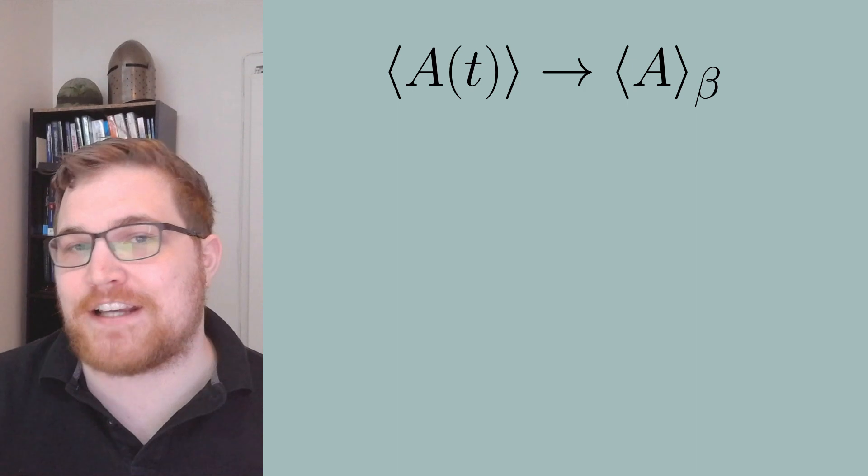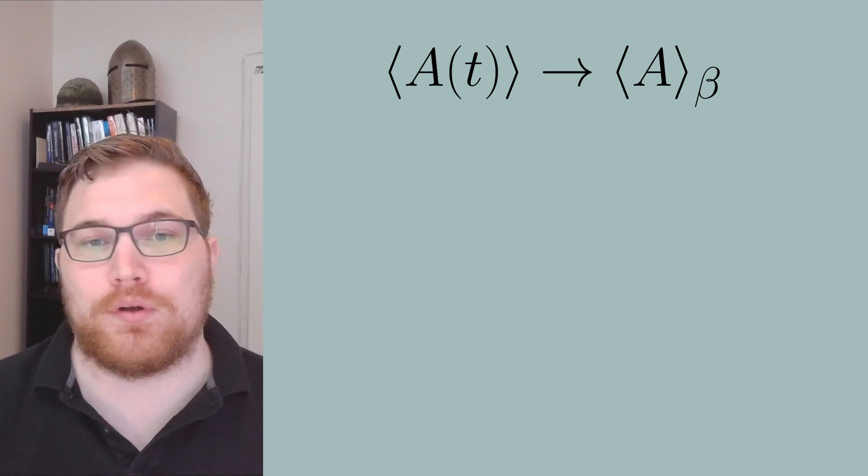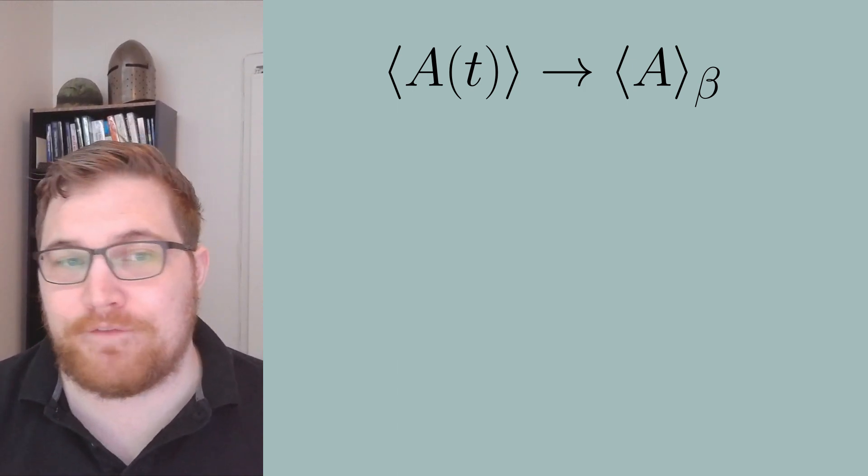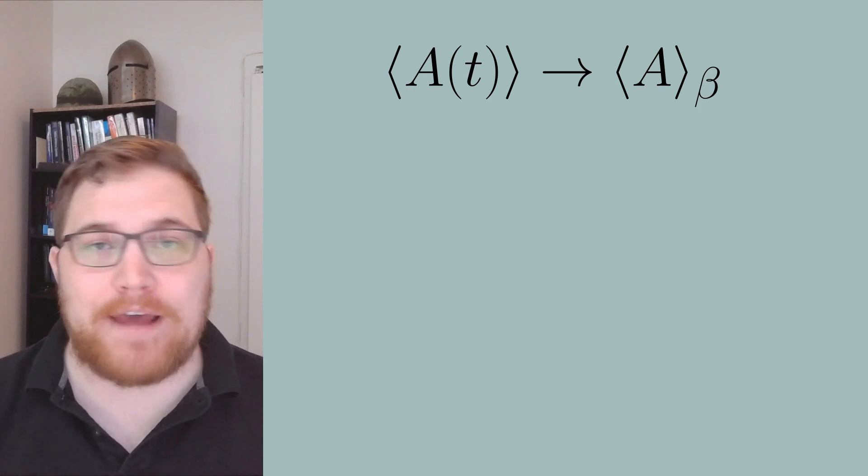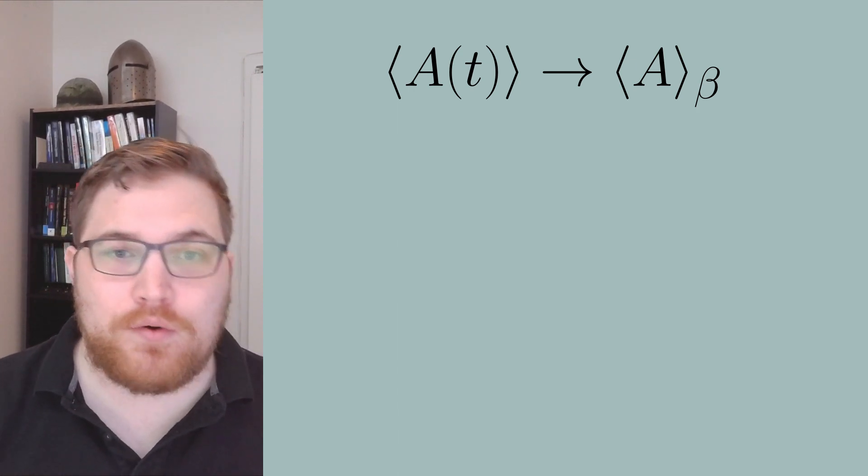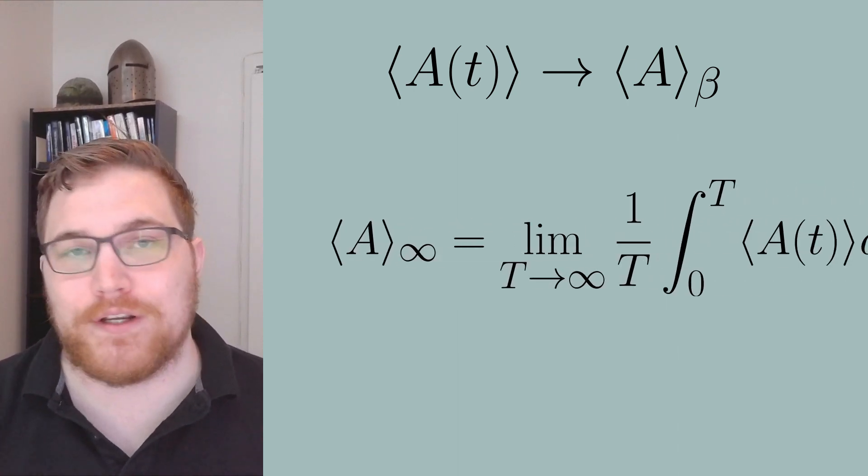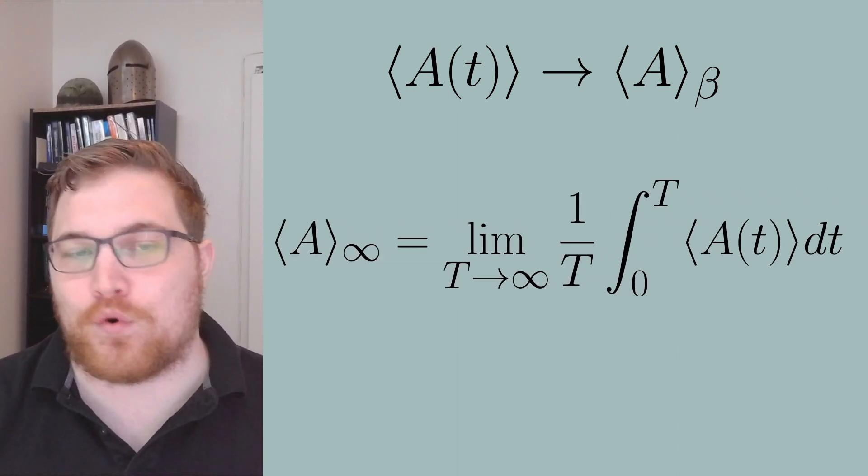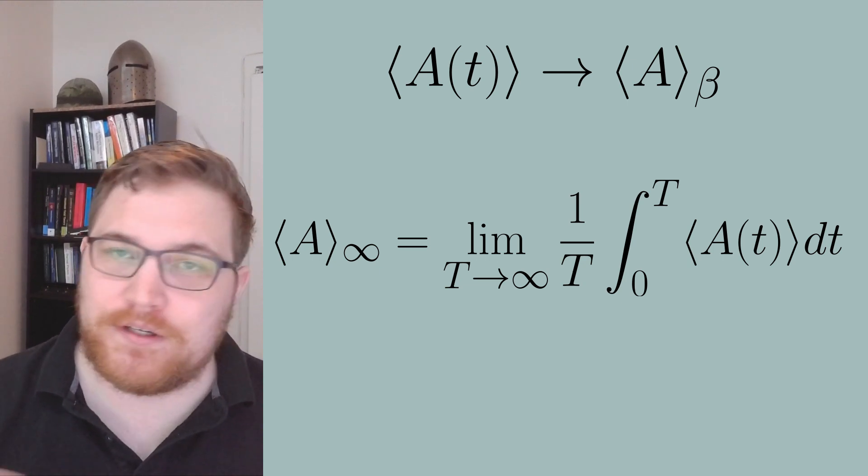So first things first, if the expectation value of our observable does reach some equilibrium value in time, what would that value have to be? Just like in the ETH video, it would be equal to its infinite time average, as it should be there forever after equilibrium is reached.